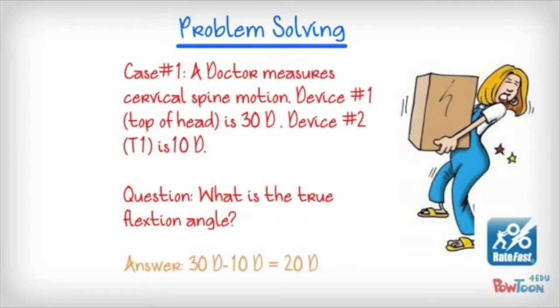Next, we have a little problem solving here for you. This is a doctor who's doing a spinal motion on a patient, and we're going to say that this patient is having her cervical spine motion measured, and she's going to be flexing her head forward, meaning her chin trying to touch down to her chest, and the doctor has two devices on this individual.